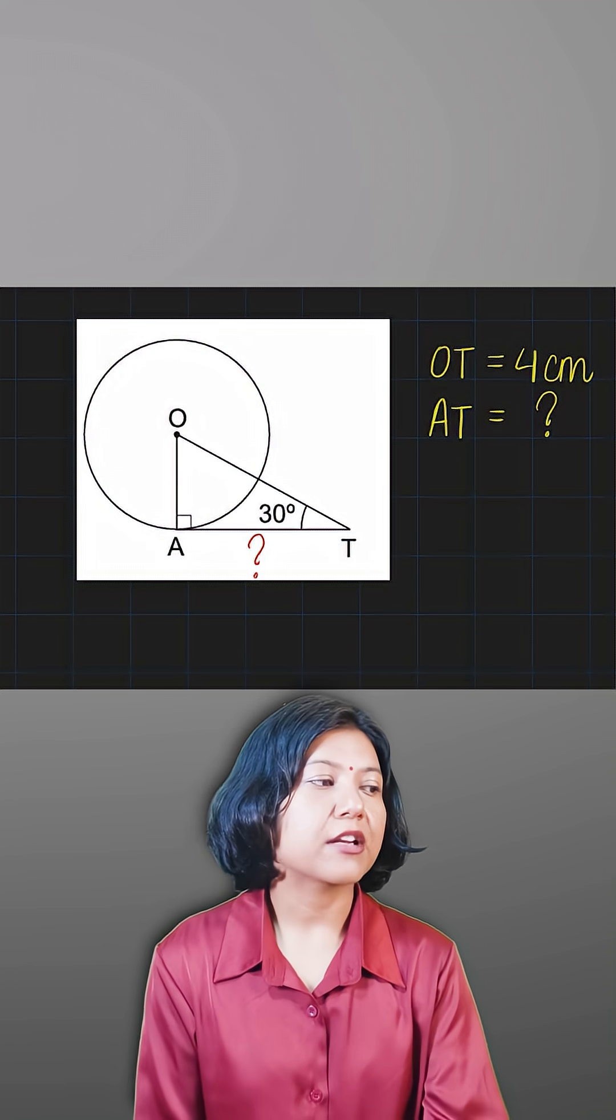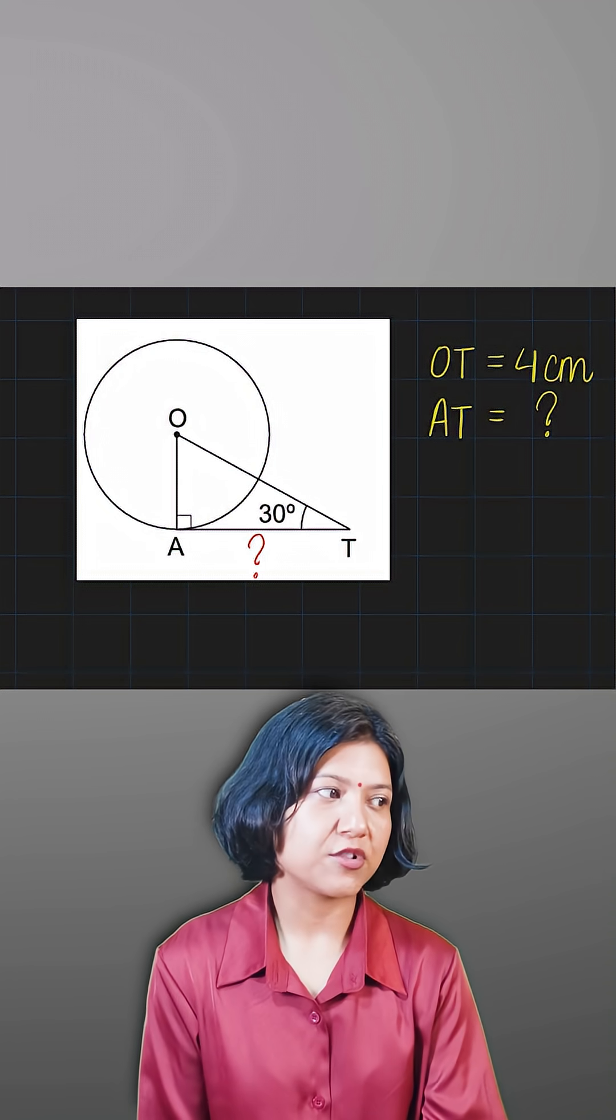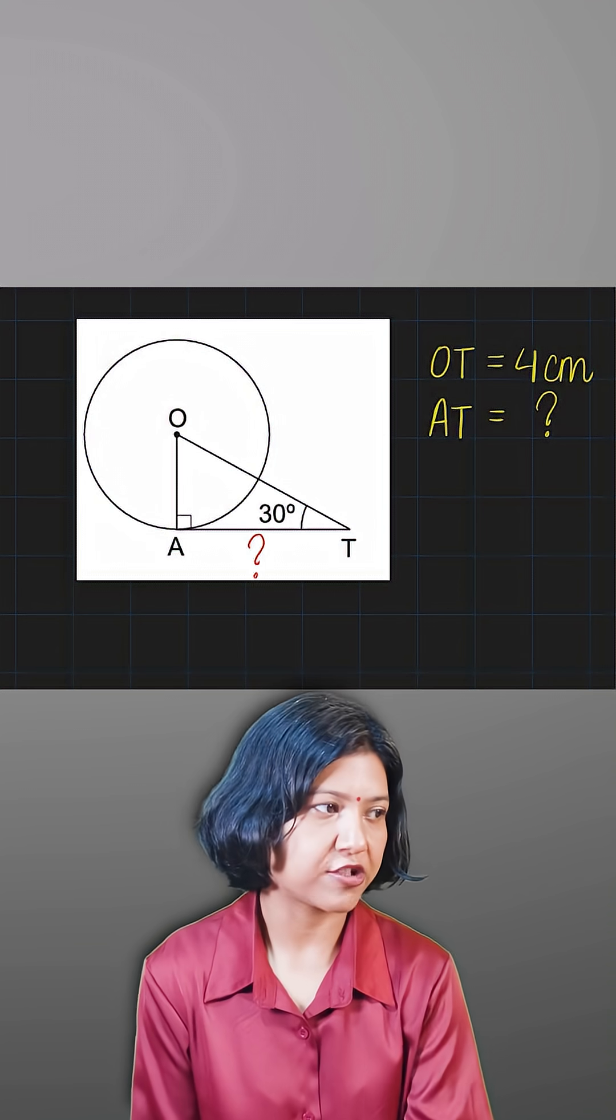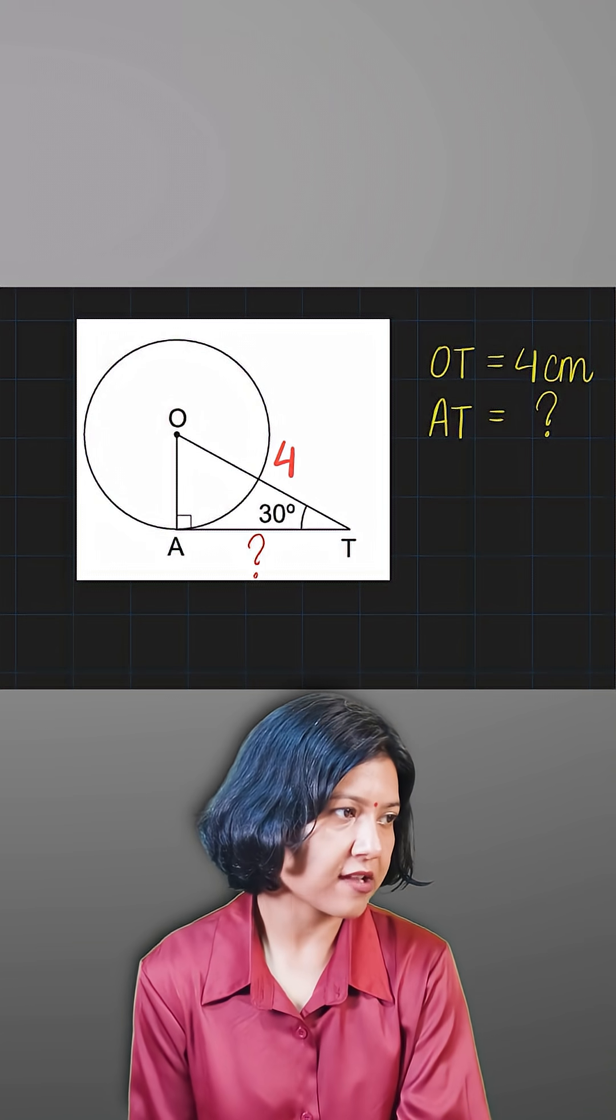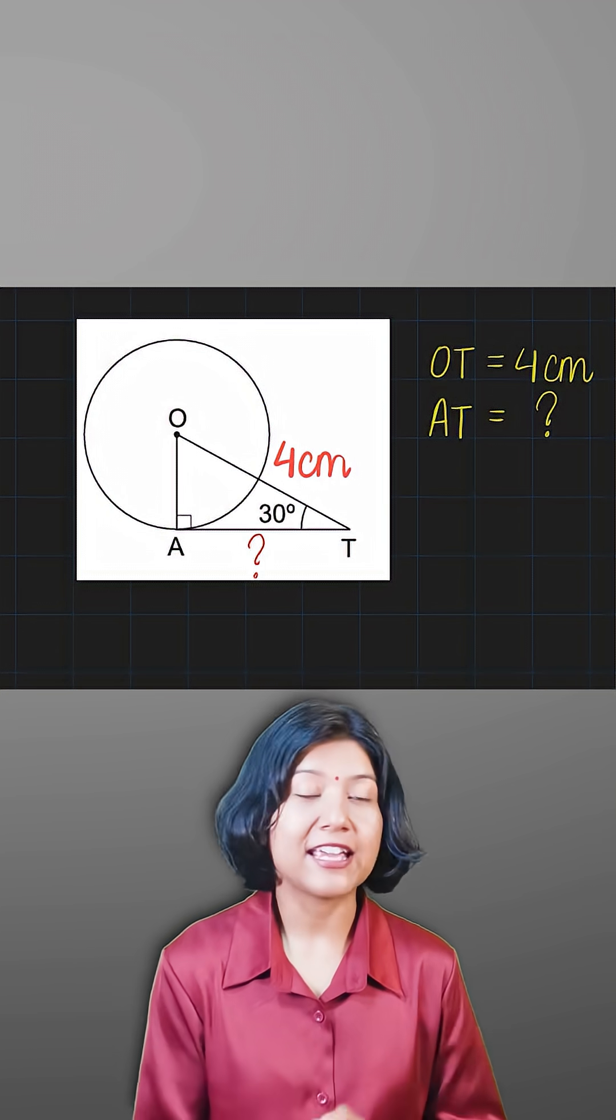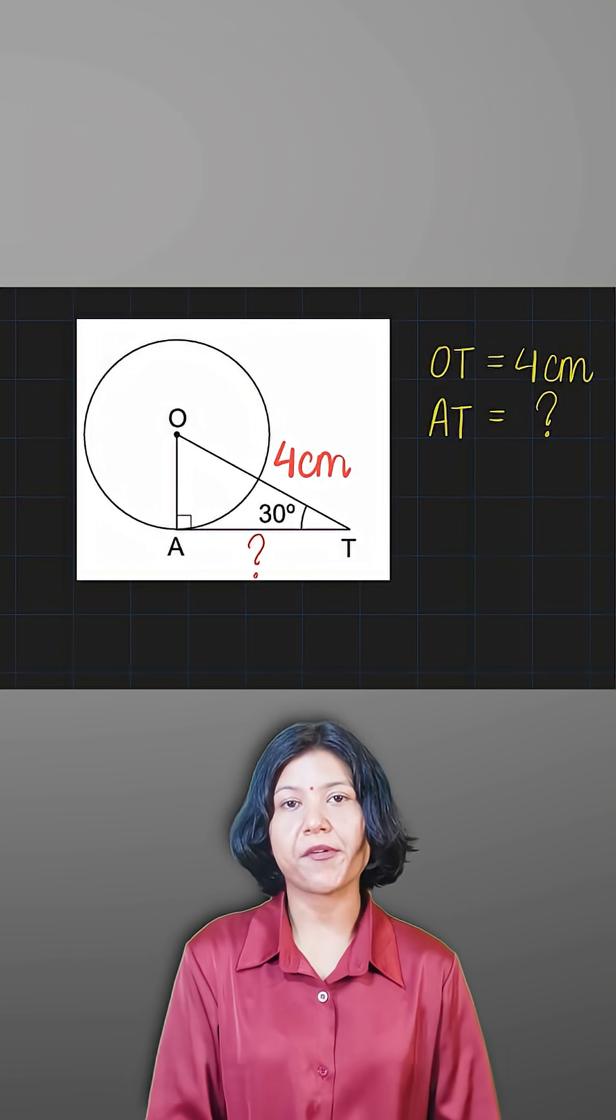You see a right triangle. In this right triangle, they have given you OT, which is the hypotenuse of the right triangle, that has been given to you as four centimeters. And the angle has been given to you.